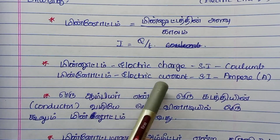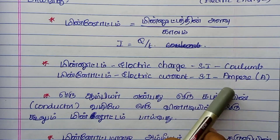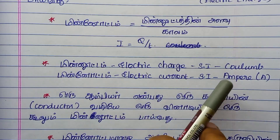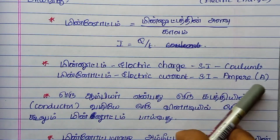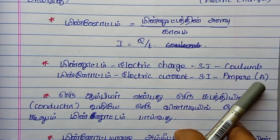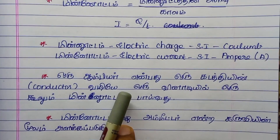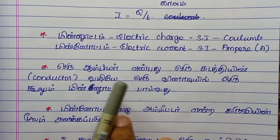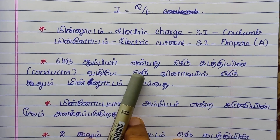The SI unit of electric current is the Ampere, denoted by capital A. One Ampere is the current when one Coulomb of charge flows per second.